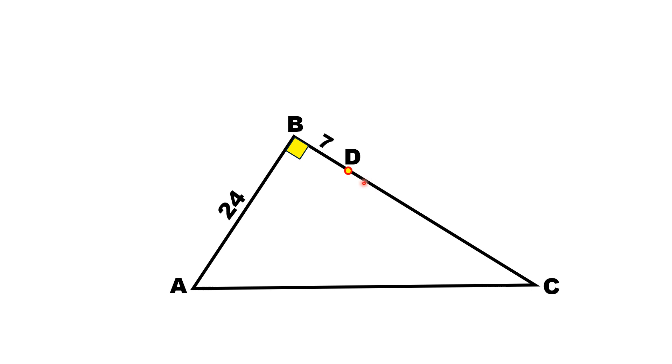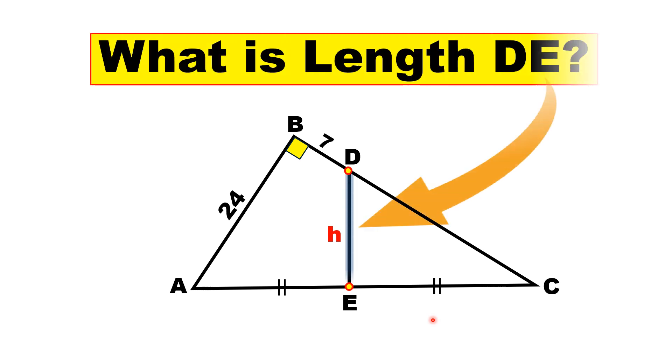If we draw a perpendicular from point D to the line segment AC which meets AC at point E, and let DE be of length h, and moreover the lengths AE and EC are equal to each other, then by using this limited data we have to find the length of DE, which is h.